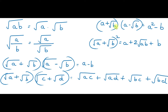Similarly, A plus root B multiplied by A minus root B equals A square minus B, because B comes under the root. Then root A plus root B whole squared equals A plus 2 root AB plus B. Also, root A plus root B into root C plus root D equals root AC plus root AD plus root BC plus root BD — we are only multiplying through in this manner.